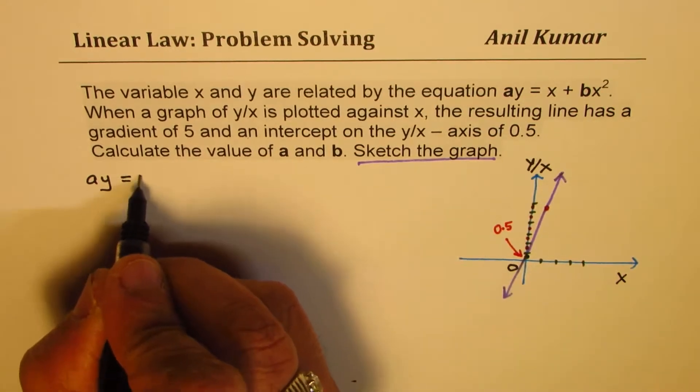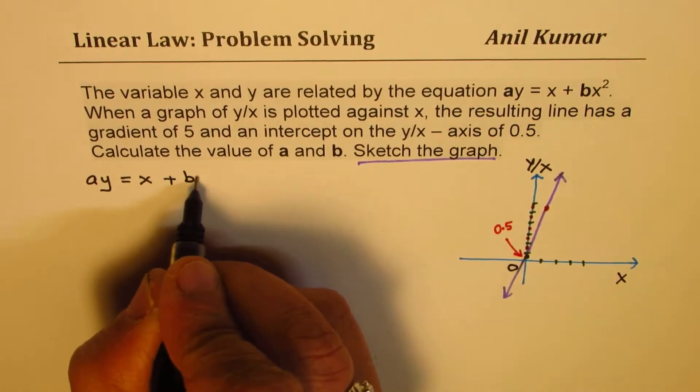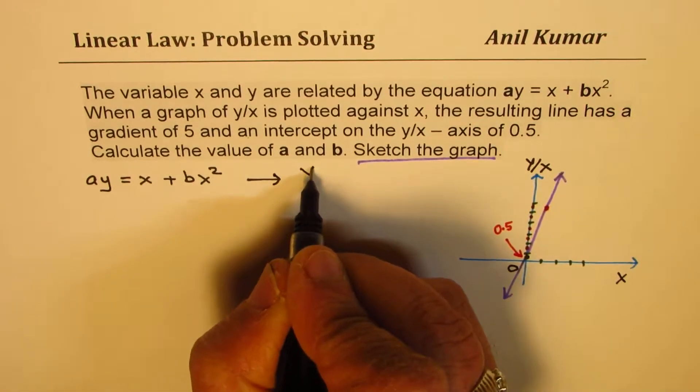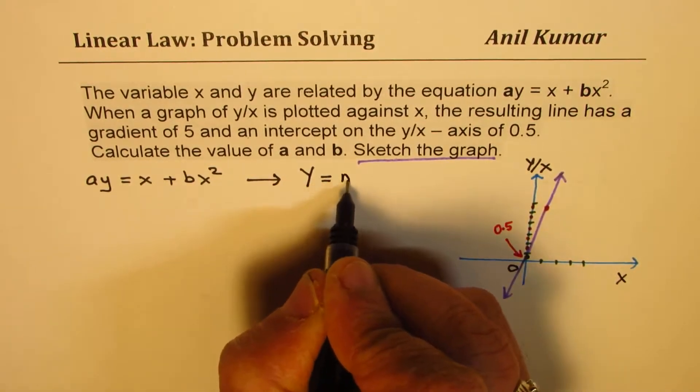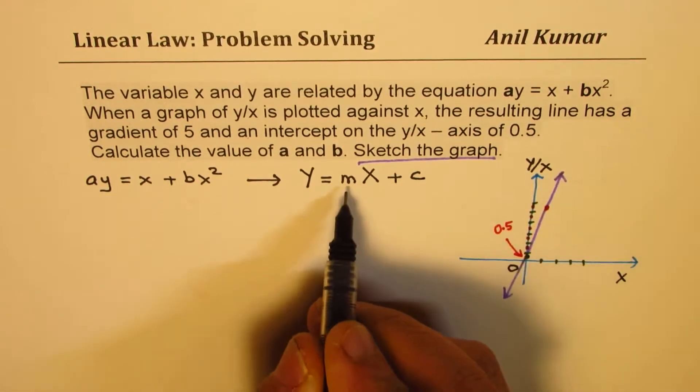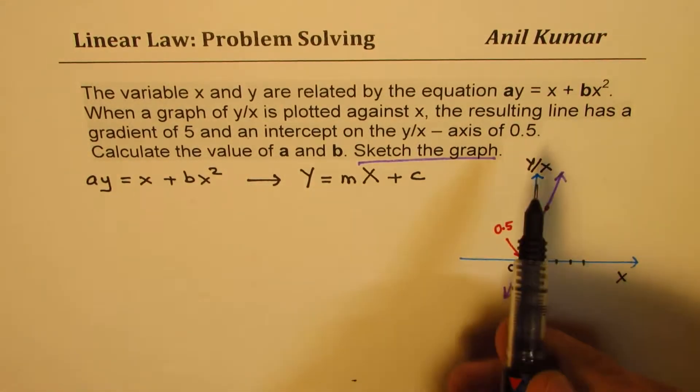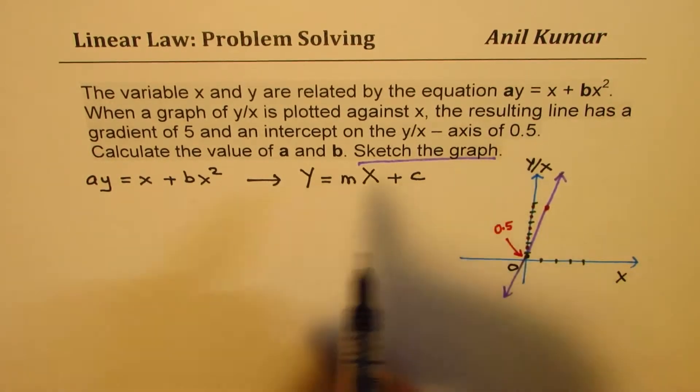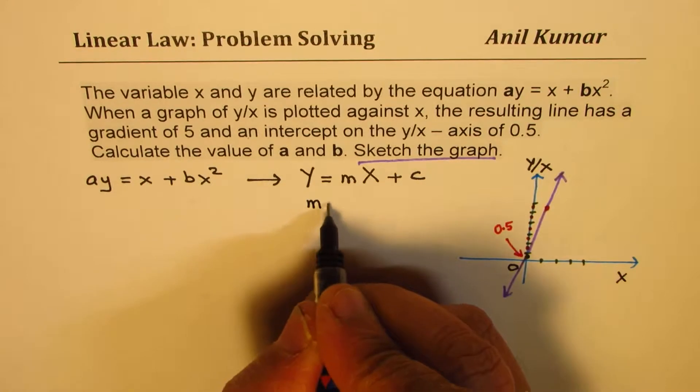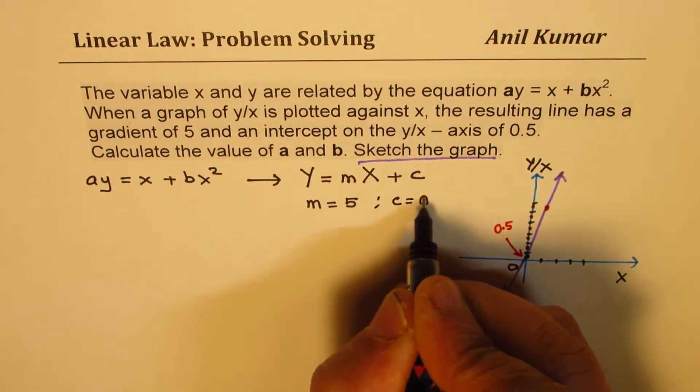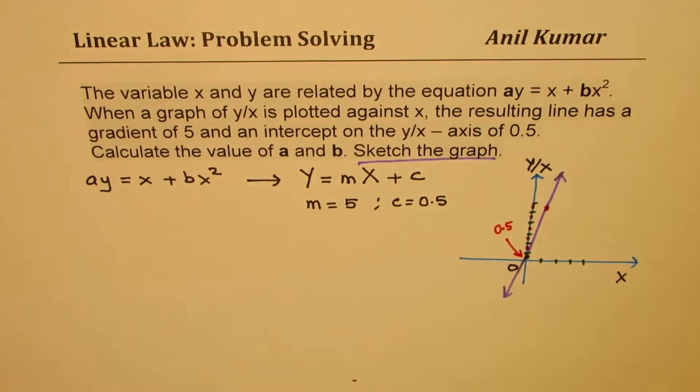We have ay equals to x plus bx². We'll try to convert this into the form y equals to mx + c, where m is your gradient which is 5, and c is 0.5. What we are given here is m equals to 5 and c equals to 0.5.